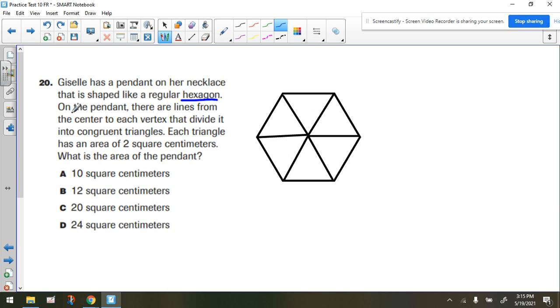On the pendant, there are lines from the center, so if this is the center, there are lines from the center to each vertex, so I drew those out so we can see them, that divide it into congruent triangles.